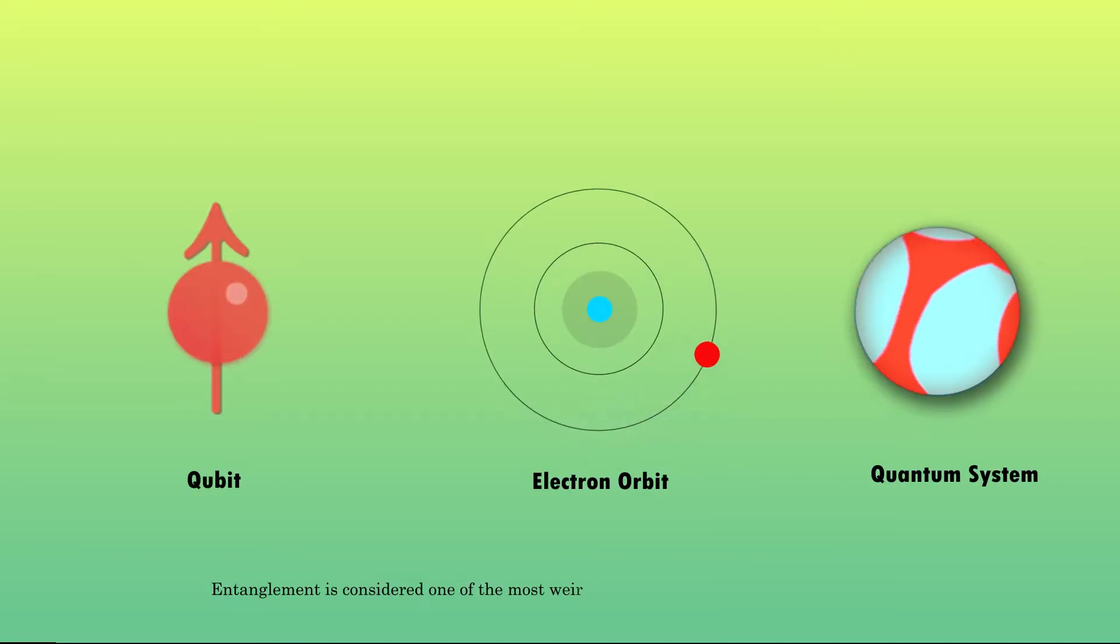Entanglement is considered one of the most weirdest phenomena in the realm of quantum mechanics that fundamentally distinguishes it from classical physics.